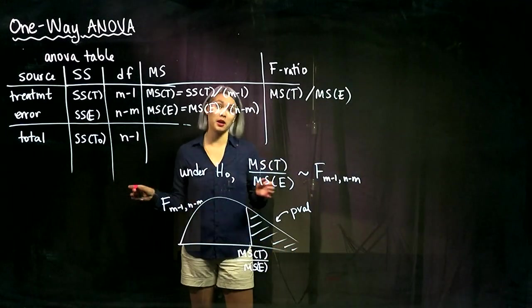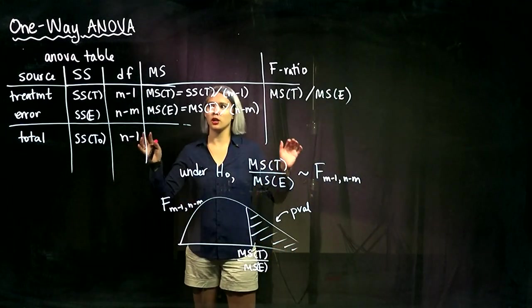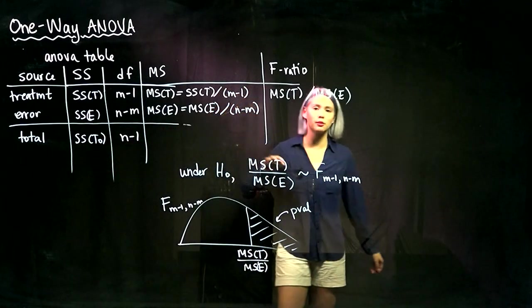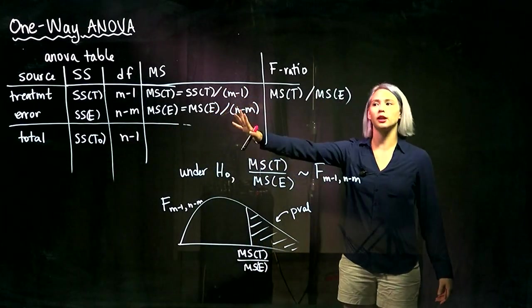So in the previous video, we went through all the math of one-way ANOVA, and now we can talk about how we summarize it. Lots of times we'll summarize it in what's called the ANOVA table here.